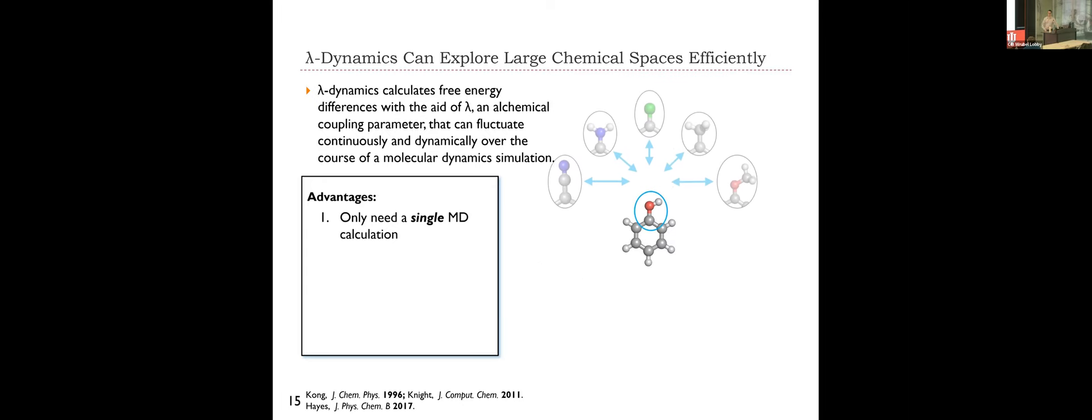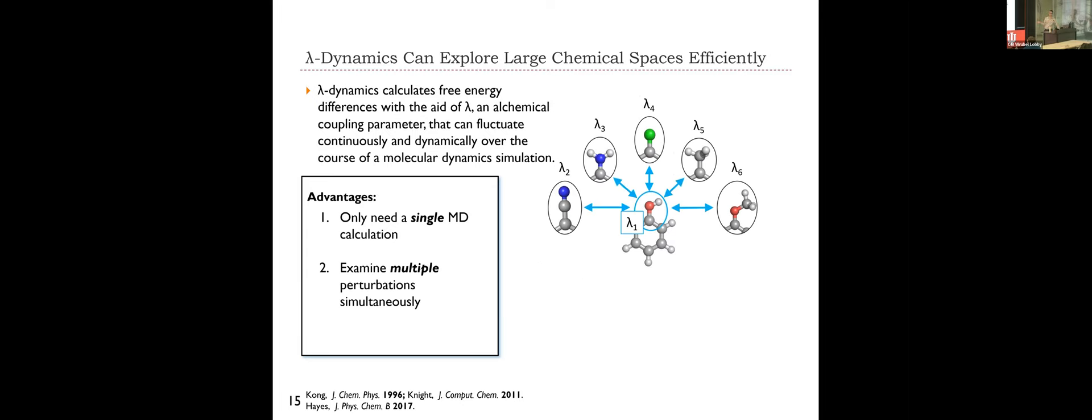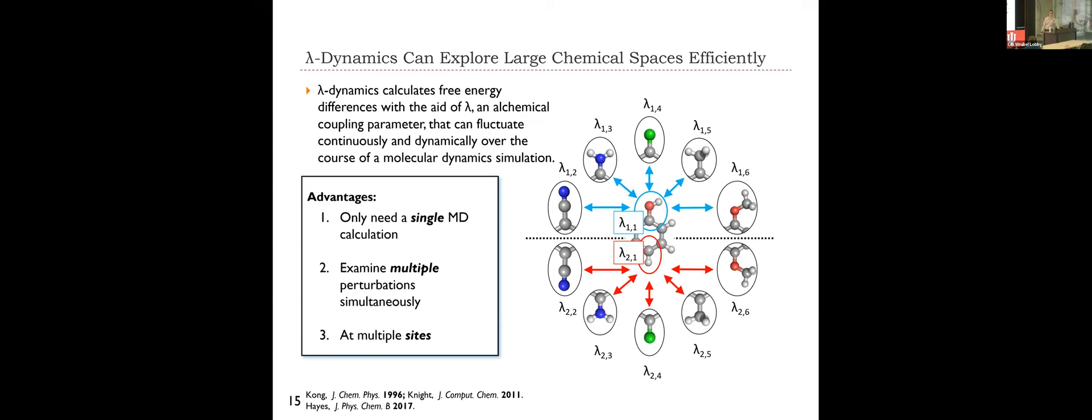But even more than that, with lambda dynamics, we can also expand the number of perturbations that we explore. So we can look at not only transforming a hydroxyl group into a methoxy group as we had before, but we can look at transforming it to many other groups. A methyl group, a cyano group, a chloro group, an amino group. And we can do this not only at one site, but we can do this at multiple sites. And so now you can start to imagine in a single calculation, we can gather statistics and information about transforming molecules from one state into a combination of different states.